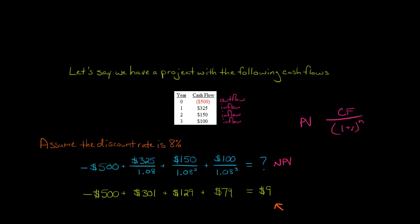So what do we have here? If you divide the 325 by 1.08, you get 301. The $150 by 1.08 squared is 129. I've done some rounding here, and then $100 divided by 1.08 cubed is $79. You add these cash flows up, it gives you positive $9.